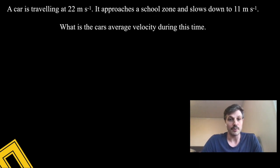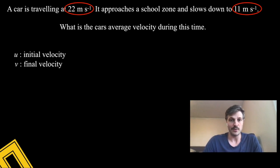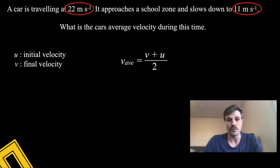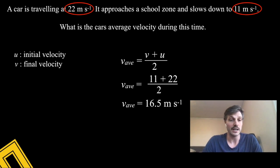Another example: a car is traveling at 22 m/s and approaches a school zone, slowing down to 11 m/s. What is the car's average velocity? We identify initial velocity u = 22 m/s and final velocity v = 11 m/s. Just like any average, you add the two quantities and divide by how many you have: average velocity = (u + v) / 2 = (22 + 11) / 2 = 16.5 m/s.